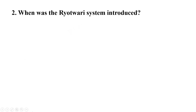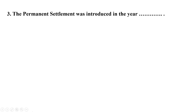Your next question: the options are A. 1773, B. 1784, C. 1819, D. 1820. And the correct answer is D. 1820. Your next question: the Permanent Settlement was introduced in the year. The options are: A. 1790, B. 1791, C. 1792, or D. 1793. And the correct answer is D. 1793.